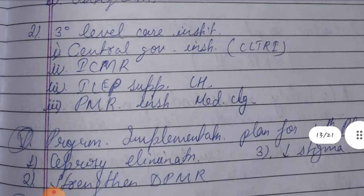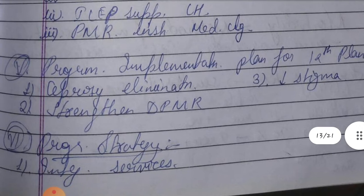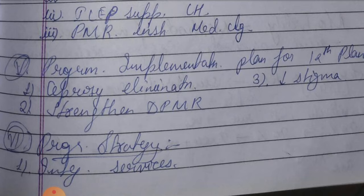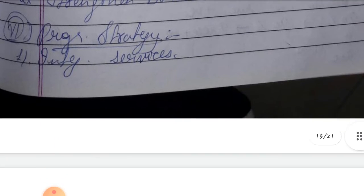Fifth, Program Implementation Plan for the Twelfth Plan period. Targets are: first, leprosy examination; second, extended DPMR; and third, decrease stigma. The Twelfth Five Year Plan aims to coordinate leprosy elimination, extend disease prevention and medical rehabilitation, and decrease stigma.